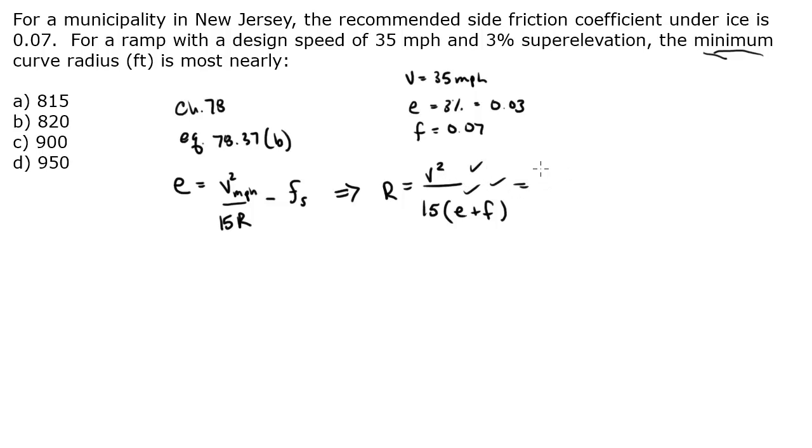Let's plug it all in. This velocity, all the units work out to give R in feet, you don't have to worry about it. So this is miles per hour squared divided by 15 times E, which is 0.03, plus F, which is 0.07.